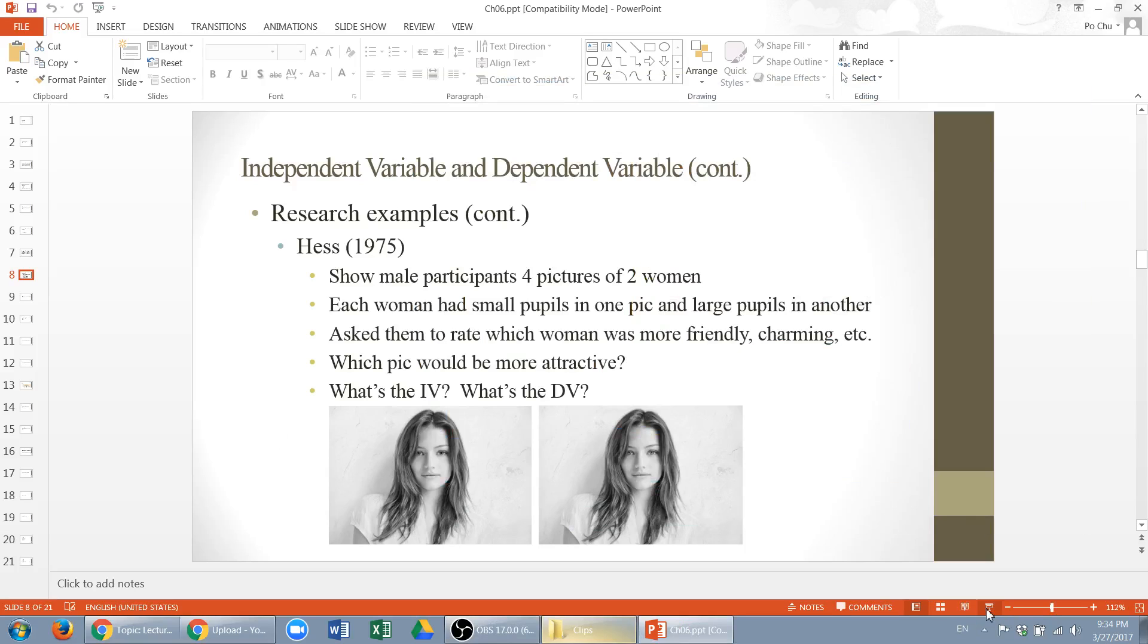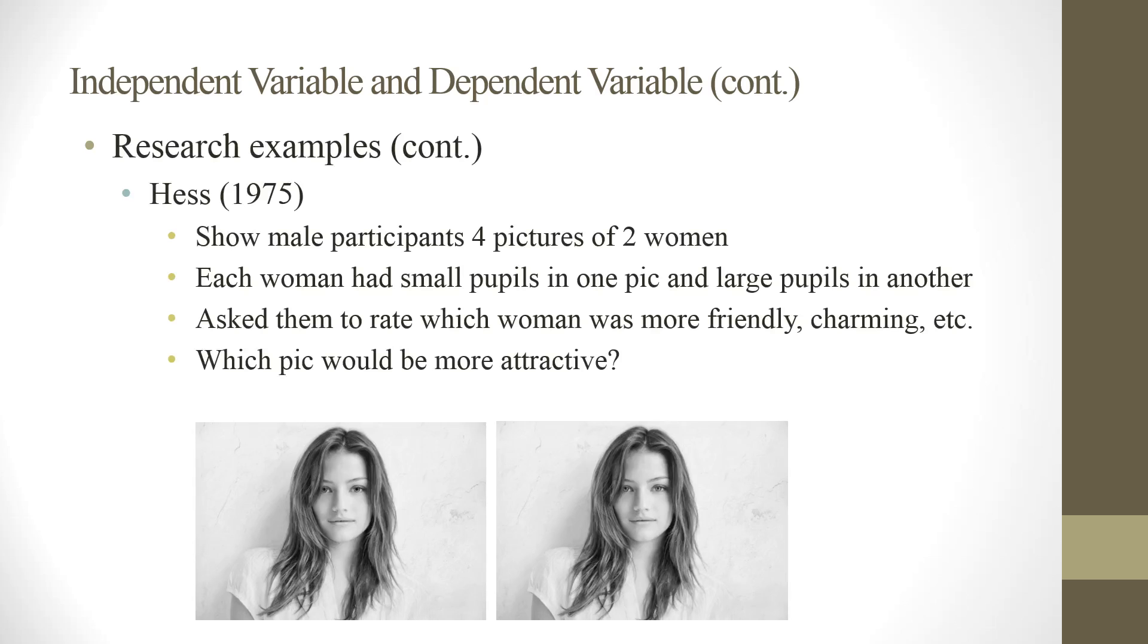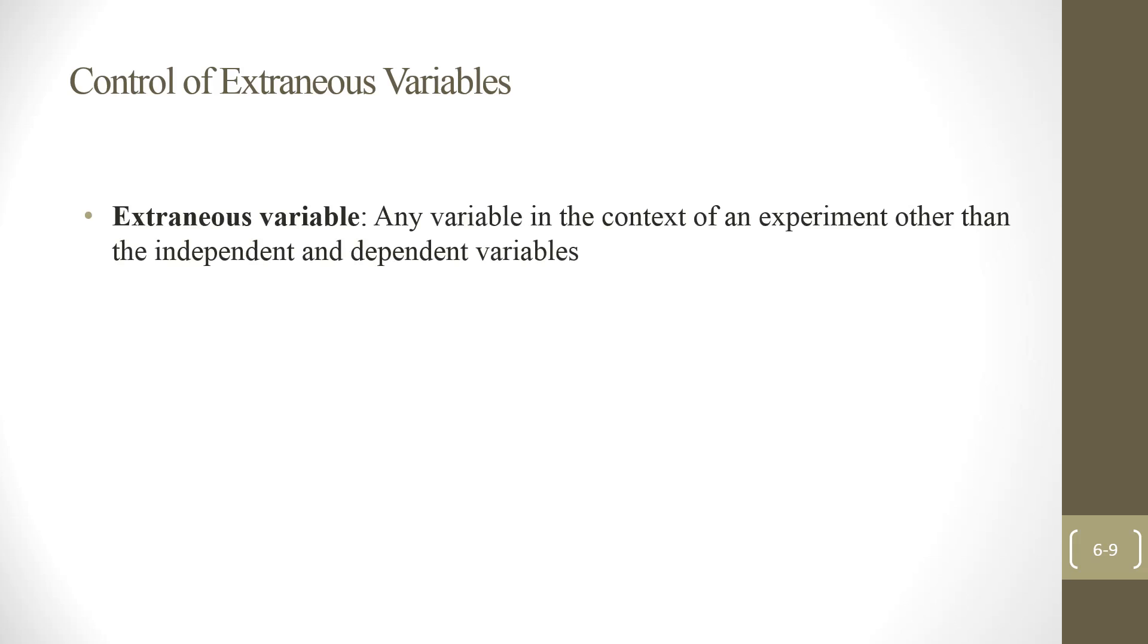Alright, so now let's keep discussing experiments. An important task of an experiment is to control extraneous variables. That is, any variable in the context of an experiment other than the independent and dependent variables that can explain the result. For these variables, it can make it difficult to separate the effects of the independent variable from the effects of extraneous variables.